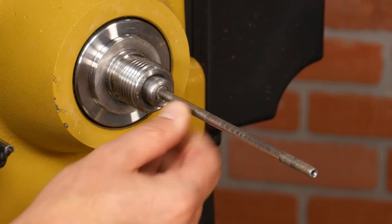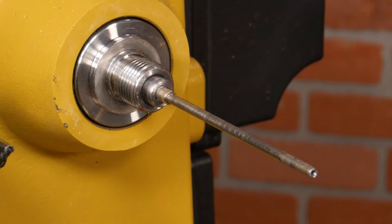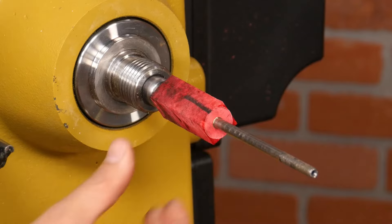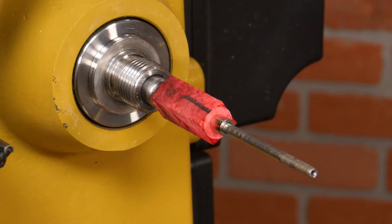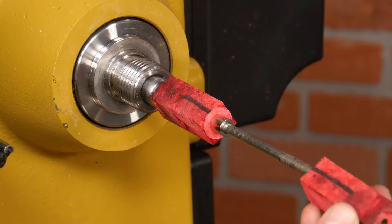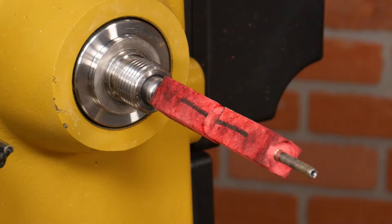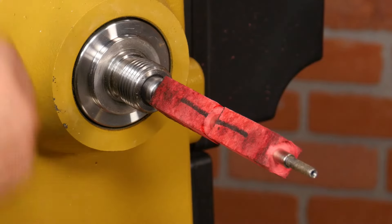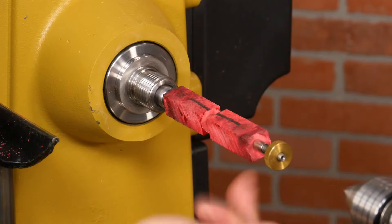Place a pen mandrel into your headstock, then slide on the first bushing, seat the first blank, place the second bushing, then the second blank, and finally slide on the third bushing and lock everything in place with the knurled nut.